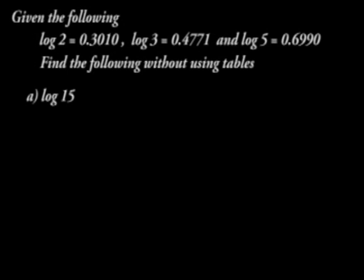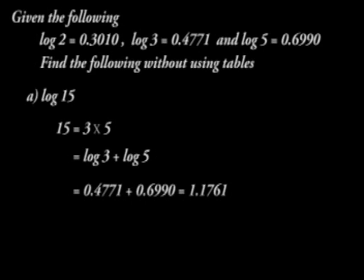Log 15. 15 can be written as 3 times 5. Remember, we said when multiplying numbers, we simply add their logarithms. And therefore, log 15 can be given as log 3 plus log 5 and the answer is 1.1761.